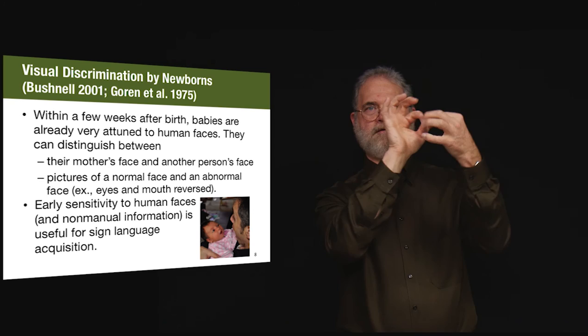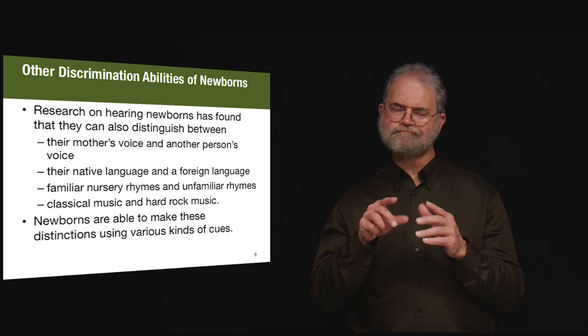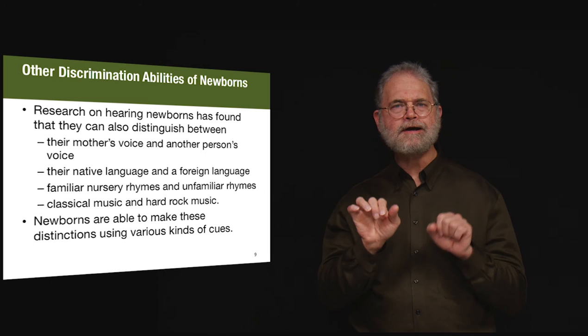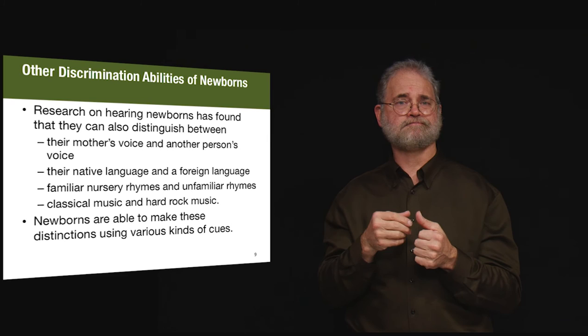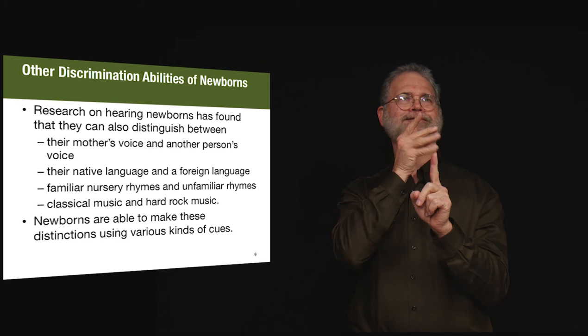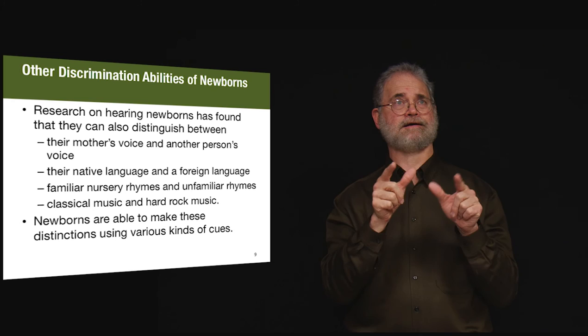Hearing babies are able to discriminate numerous types of sounds at an early age. For example, they can discriminate between their own mother's voice and that of another person. They can discriminate between speech sequences from their own language versus those from a different language.